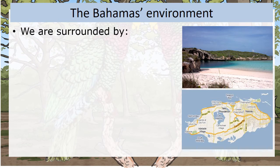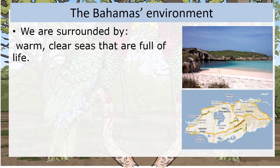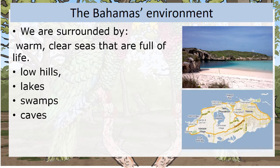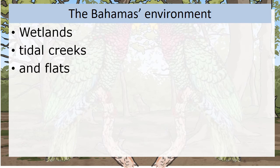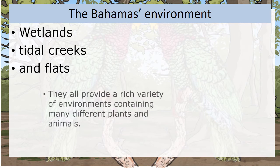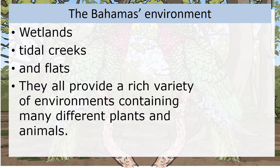The Bahamas' environment. We are surrounded by warm, clear seas that are full of life. We have low hills, lakes, swamps, caves, and lagoons. We have wetlands, tidal creeks, and flats. They all provide a rich variety of environments containing many different plants and animals.